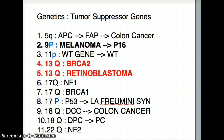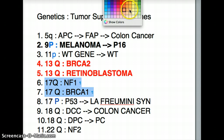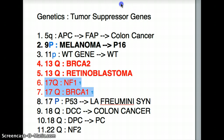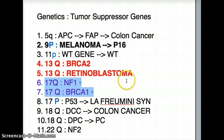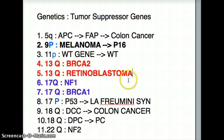The next one after 13 is 17. There are two 17Q associations. One is NF1 — that's the one that causes lots of neurocutaneous tumors. And the other 17Q causes BRCA1, which is associated with breast and ovarian cancer.